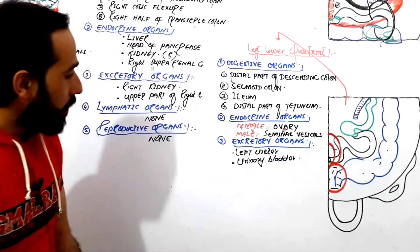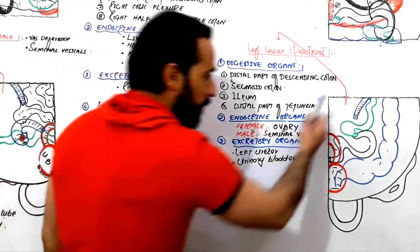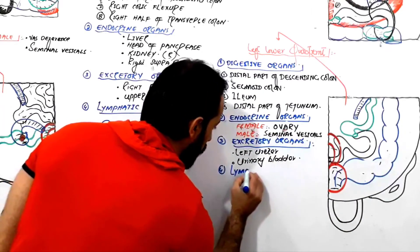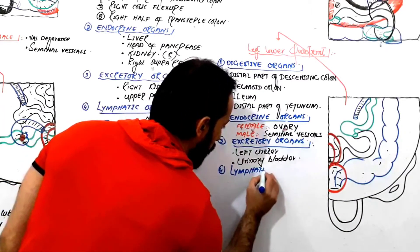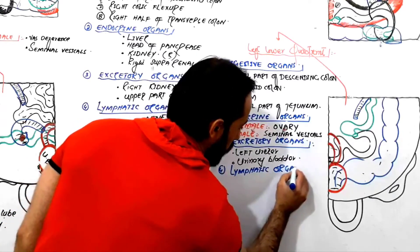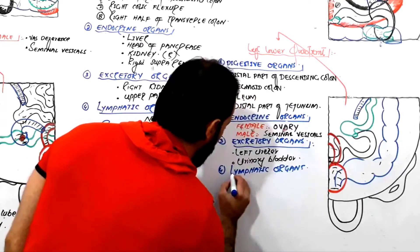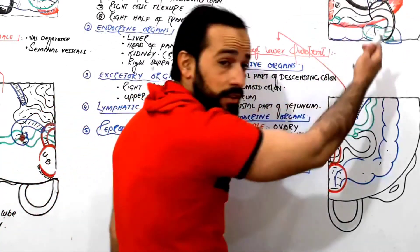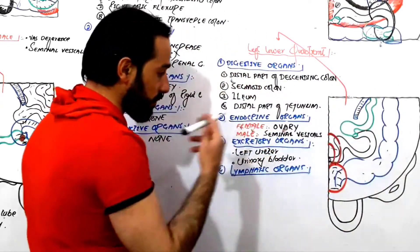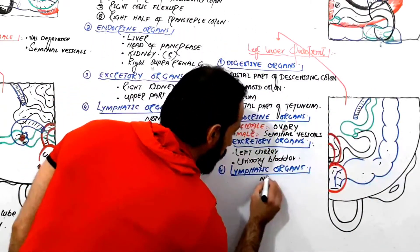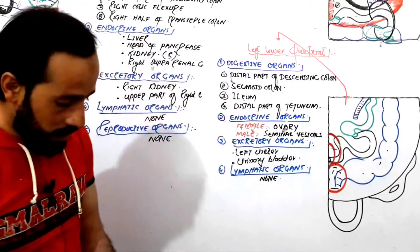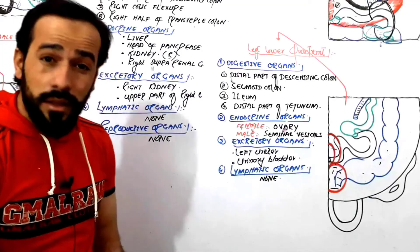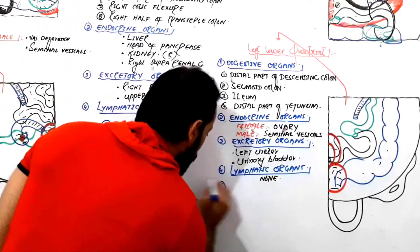The fourth group of organs are the lymphatic organs. Are there any lymphatic organs in the left lower quadrant? No. We do not have any lymphatic organ — such as the spleen — present in the left lower quadrant of the abdominal cavity. None of the lymphatic organs are found there.